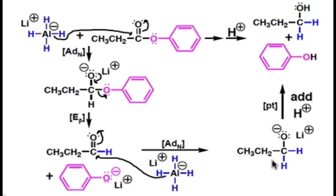Now in this intermediate, there are no good leaving groups to facilitate beta elimination. Therefore, simple protonation then occurs. This creates our primary alcohol shown here.